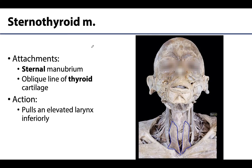Moving on to the deeper infrahyoid muscles, let's start with the sternothyroid. Note that the sternohyoid had to be removed in this image to see these muscles. This muscle extends inferiorly from the sternal manubrium — you can see it heading a little towards the clavicle as well — all the way up to the oblique line of the thyroid cartilage. Importantly, this muscle does not attach to the hyoid bone, so it plays no direct role in hyoid bone movement. When it contracts, it can depress the larynx if it was previously elevated.